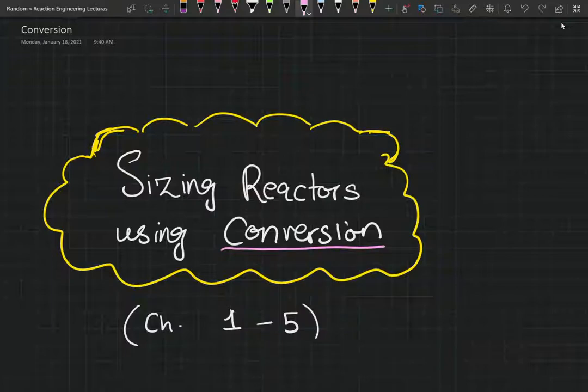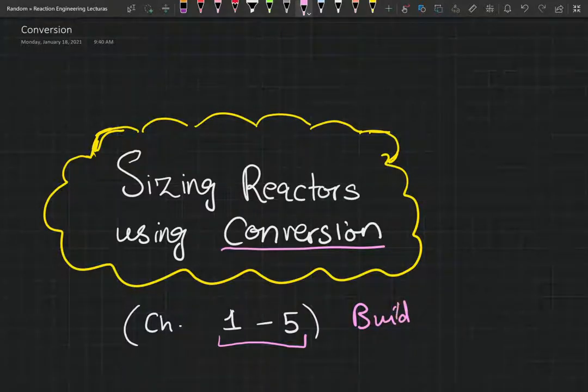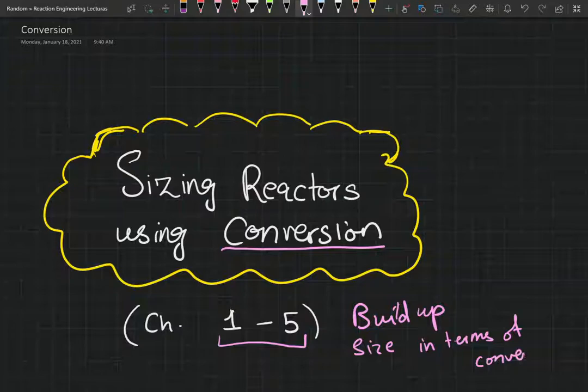In the fifth edition of Elements of Chemical Reaction Engineering by H. Scott Fogler, the first five chapters are a build-up. You're basically making an algorithm to size reactors in terms of conversion. So the first five chapters are going to be sizing your reactors using conversion.